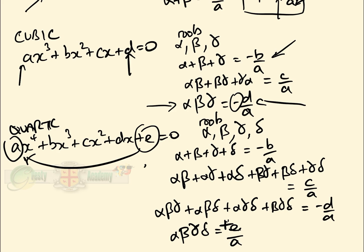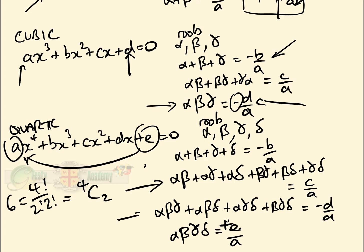It does look a little bit horrific, but it's not. There are 6 terms in the pairs sum, which is 4C2 = 4!/(2!·2!) = 6, because there are 6 ways to choose any 2 of the 4 roots. The triple products term is 4C3 = 4!/(3!·1!) = 4.